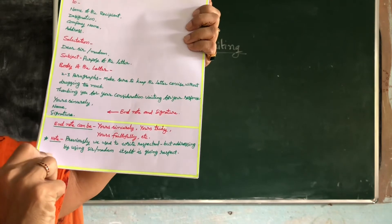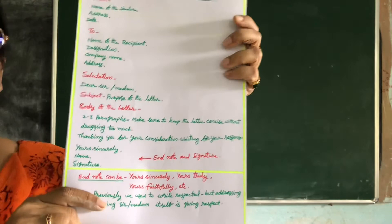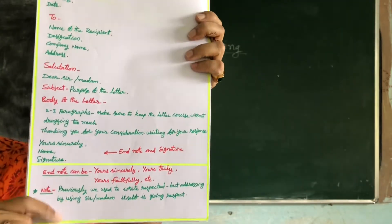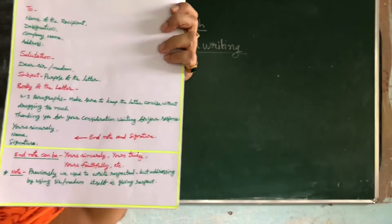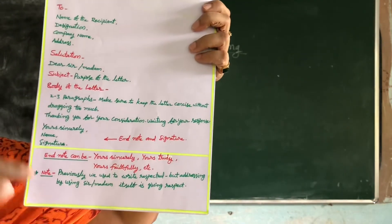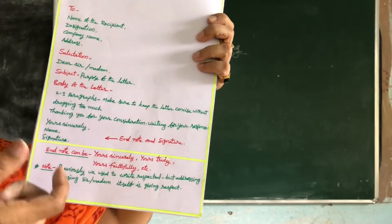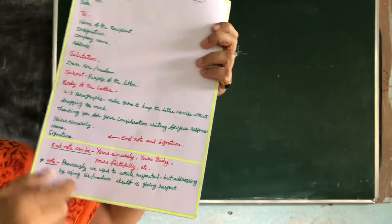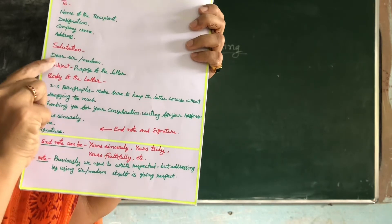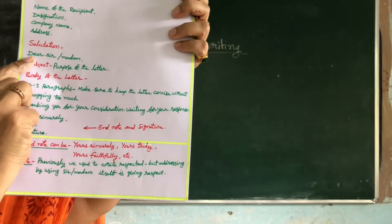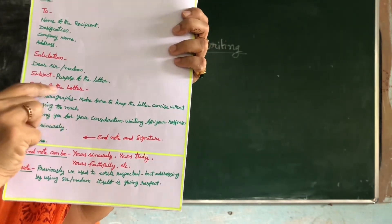Previously, you may have seen letters using 'Respected Sir' or 'Respected Madam' as the salutation. By using 'sir' or 'madam' itself, you are already showing respect. So there is a change in the way of addressing — you can write 'Respected Sir' in the old way, or you can also write 'Dear Sir' or 'Dear Madam.' Remember this as well.